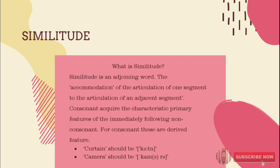An example of similitude is in the word 'curtain', which should be pronounced as 'curtain' — with a K sound. Another example is the word 'camera': even though the first letter is C, it is pronounced with a K sound — 'camera', not a CH sound. So it is pronounced 'camera', not 'ch-amera'.